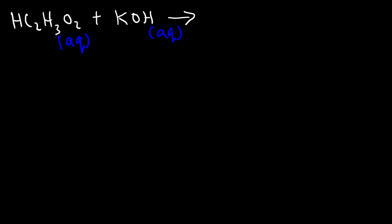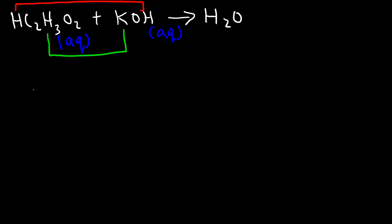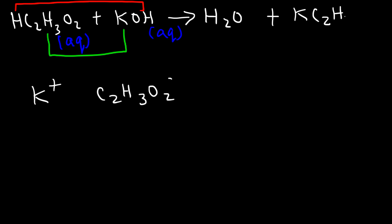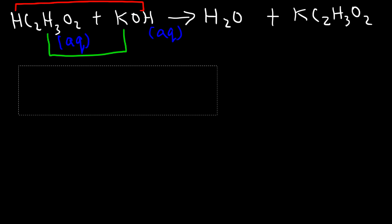We're going to follow the same steps as before. Pair up H with OH, which produces liquid water. Next, pair up K with acetate. Potassium has a positive one charge and acetate has a negative one charge, so they combine in a one-to-one ratio, giving KC₂H₃O₂ — potassium acetate. According to the solubility rules, acetate is always soluble, so it's in the aqueous phase. Water is in the liquid phase. The chemical reaction is already balanced, so we don't need to change anything.